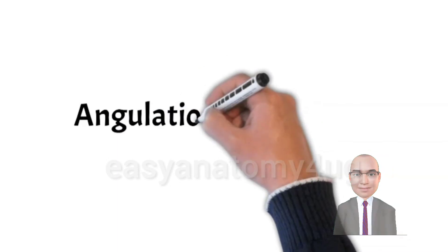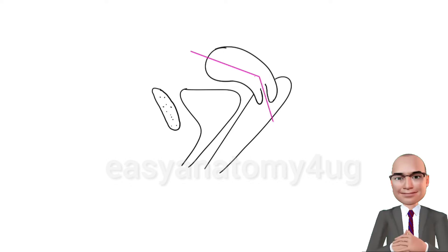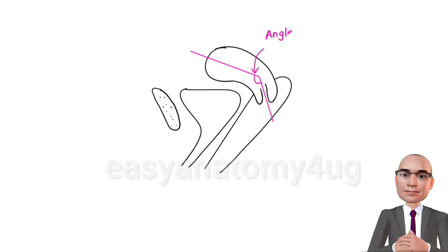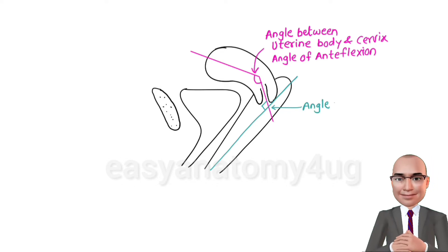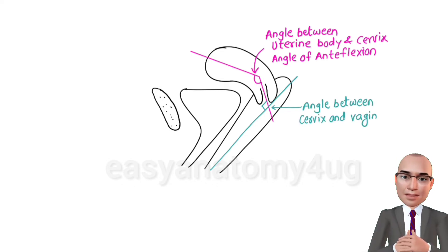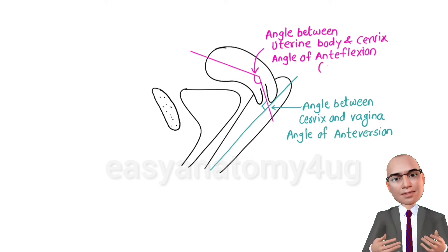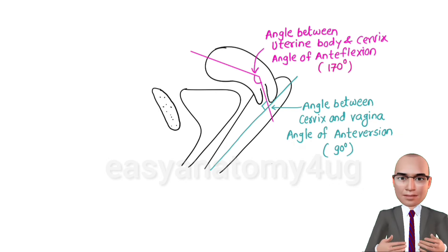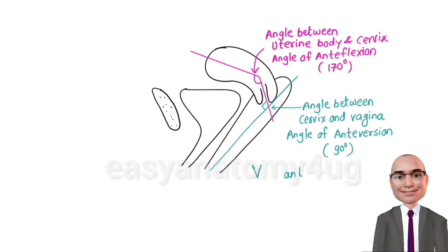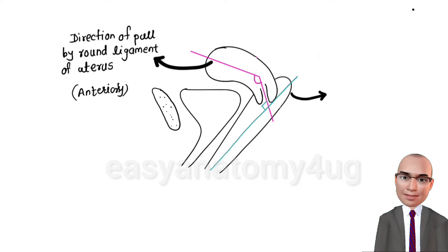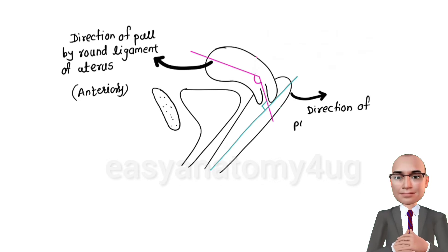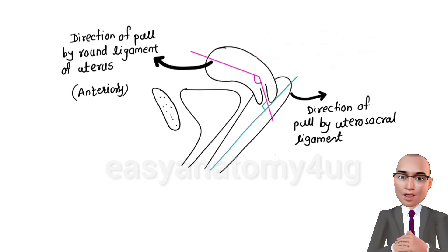Let's understand the angulations of the uterus with the help of diagrams. Normally the uterus is anteverted and anteflexed. The angle of anteflexion is the angle between the long axis of the body of the uterus and the long axis of the cervix. The angle of anteflexion is around 170 degrees whereas anteversion is around 90 degrees. We can remember V for vagina and V for version — so the angle between the cervix and vagina is anteversion. These angles are maintained by the pull of the round ligament of the uterus anteriorly and the pull of the utero-sacral ligament posteriorly.